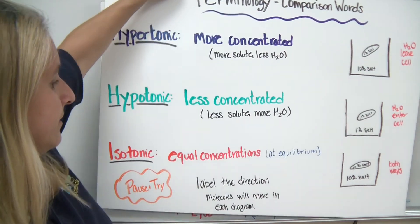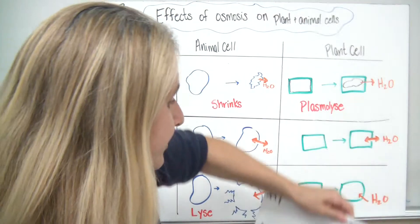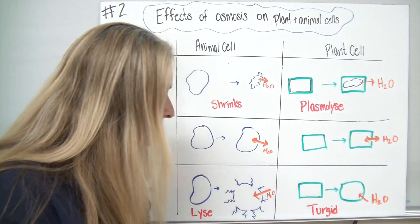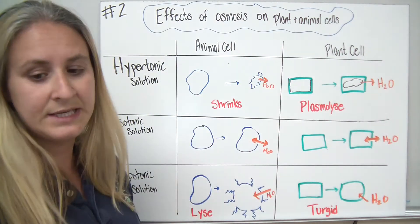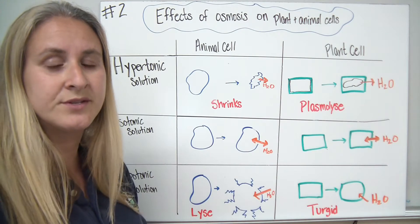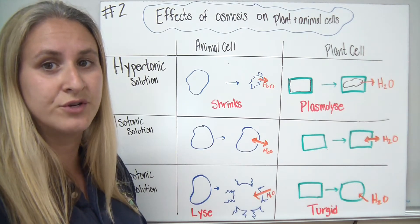Let's move on to some diagrams for examples of what would happen in a real cell as opposed to our simulated cells. So the effects of osmosis on plants and animal cells. Now remember, osmosis is just a fancy term for the diffusion of water.